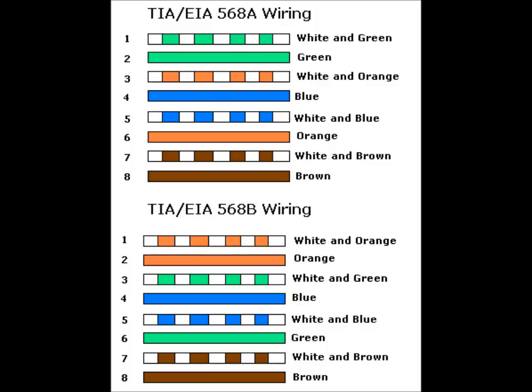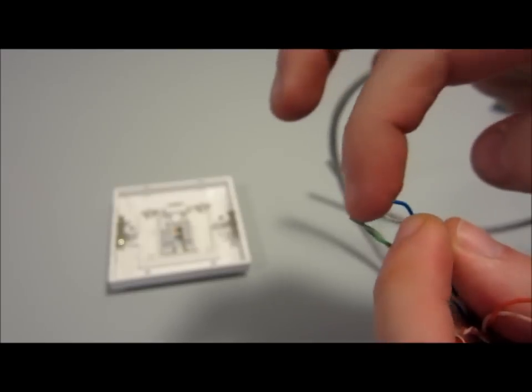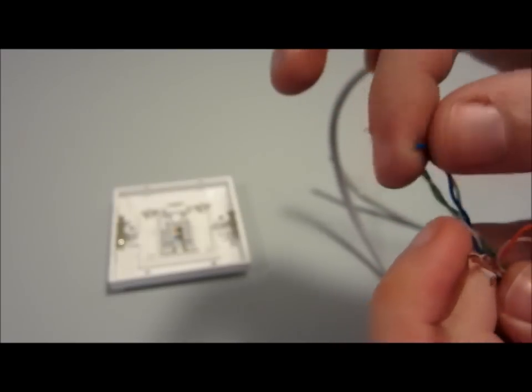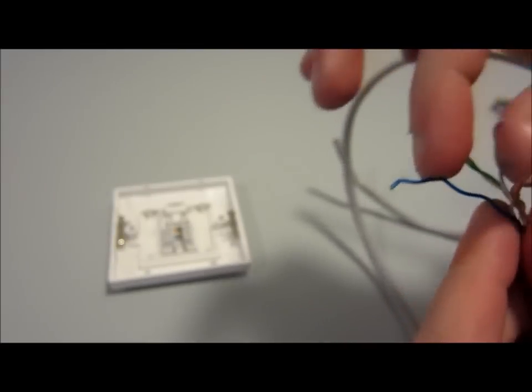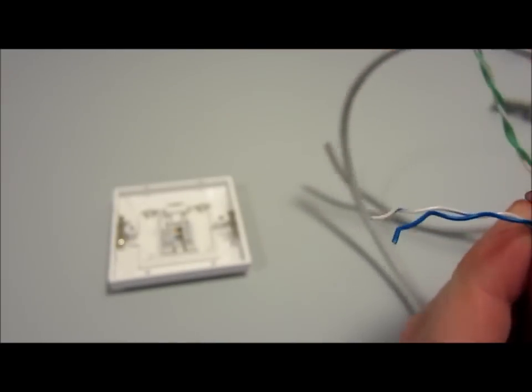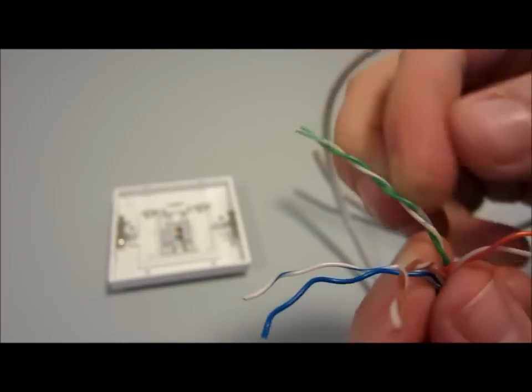Most of the time straight through connections are required, especially when running through a wall. This is where the same wiring standard is used at both ends of the cable. For example, you would wire 568B at both sides or 568A at both sides.